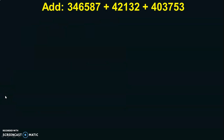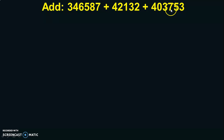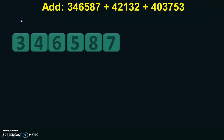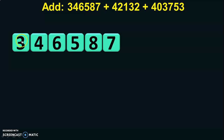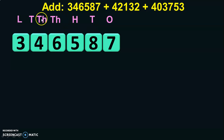Let us do another example. The question is: Add 3,46,587 plus 42,132 plus 4,03,753. In such cases, first write down the biggest number given, which is a six-digit number: 3,46,587. Write down the place values — 1s, 10s, 100s, 1000s, 10,000s, and lakhs.